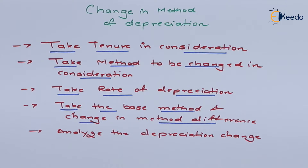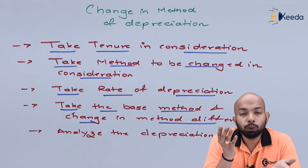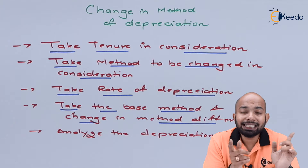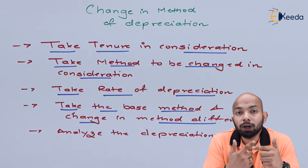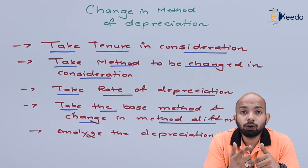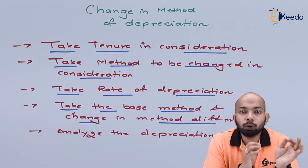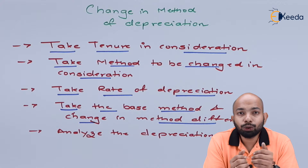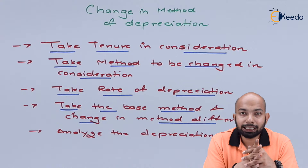You also have to compare the base method used and the new method to be used. The difference between them should be analyzed thoroughly before making the change. Any change affecting the profit and loss account of a company requires good justification as to why the changes were made and how they were incorporated, so the company can put forward its points without being cross-questioned for any wrong decision.